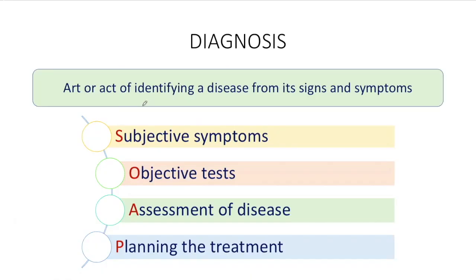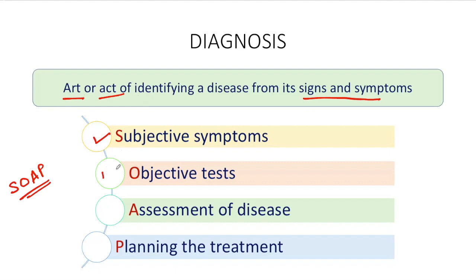What exactly is meant by diagnosis? Diagnosis is the art or act of identifying a disease from its signs and symptoms. To reach an accurate diagnosis, there is a systematic approach given the name SOAP, where S means subjective symptoms, O means objective findings obtained by taking objective tests, A means assessment of the subjective symptoms and objective findings to reach an accurate diagnosis, and finally P means planning the treatment. Now I'll explain all these terms in detail.